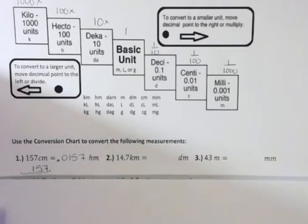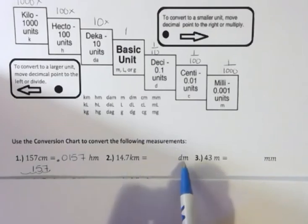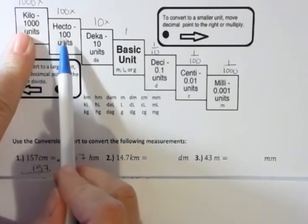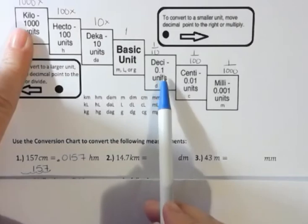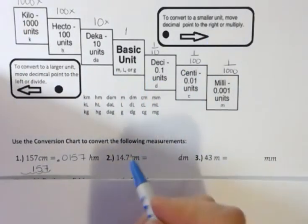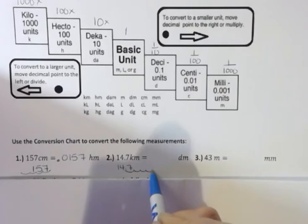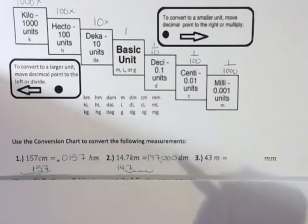Next, I have 14.7 kilometers and I want to change it into decimeters. Going from kilometers to decimeters, I move one, two, three, four places — but this time to the right, because I'm going from a larger unit to a smaller unit. So I take 14.7 and move the decimal four places to the right, giving me 147,000 decimeters.